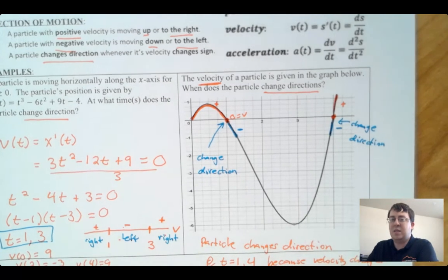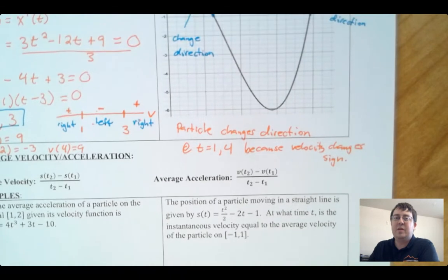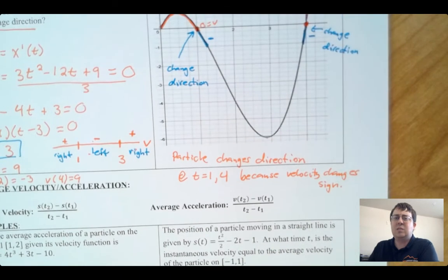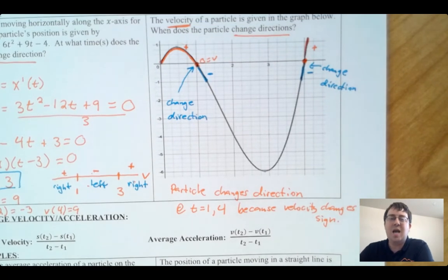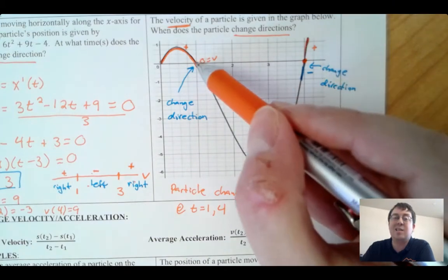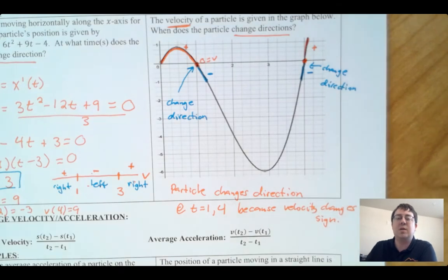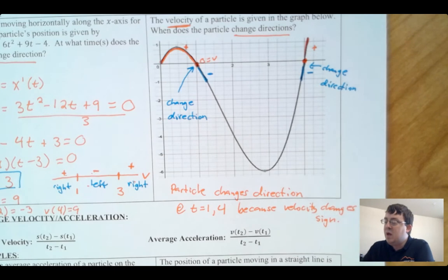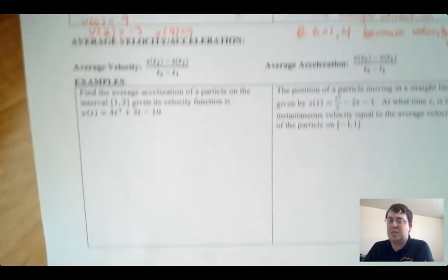So the particle changes direction at t = 1 and t = 4 because that's where the velocity changes sign — where it crosses the x-axis, with one side below and one side above. The particle changes direction two different times.